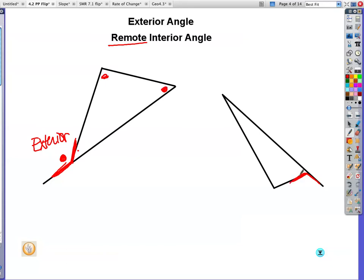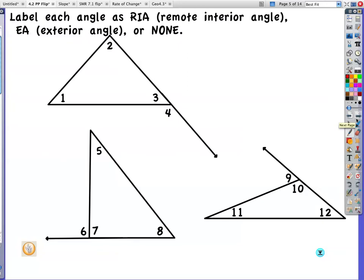Same over here. This is your exterior angle. So that means this is one of the remote interior angles, and here is your other remote interior angle. This one right here, not remote. It's an interior angle, but it's not far away.